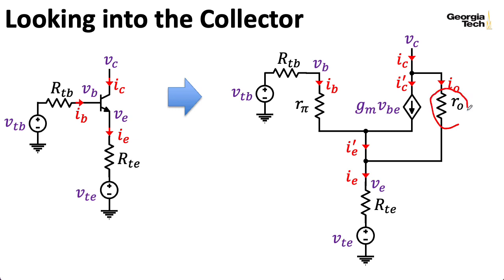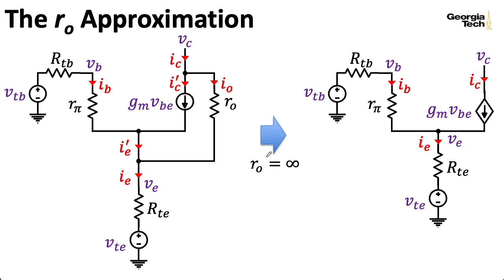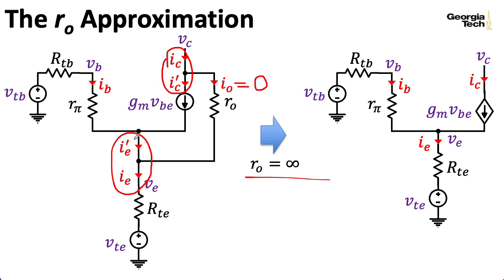The presence of this so-called output resistance R-naught can greatly complicate our analysis, so we're quite often going to approximate R-naught as being an infinite resistance, so R-naught basically goes away. There's one particular case — computing the Norton resistance looking into the collector — where we're not going to use this approximation. But for computing the Thevenin resistance looking into the base or emitter, and for computing the Thevenin voltages, we're going to use this R-naught equals infinite approximation. Under that approximation, I-naught is going to be zero, and Ic is going to equal Ic prime, and Ie is going to equal Ie prime. That's going to become important later.